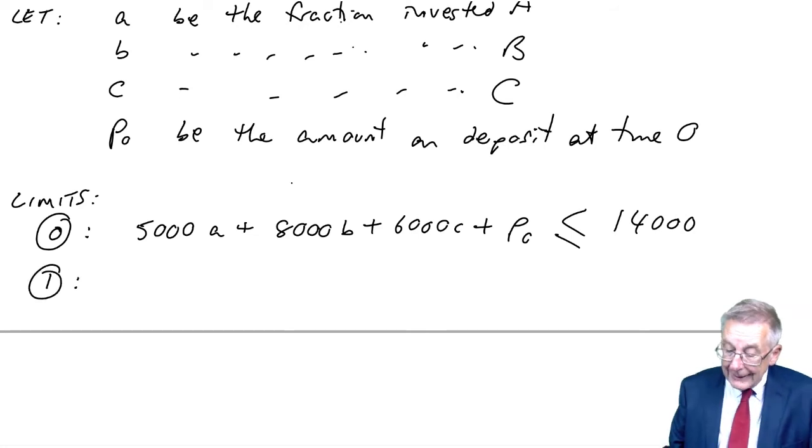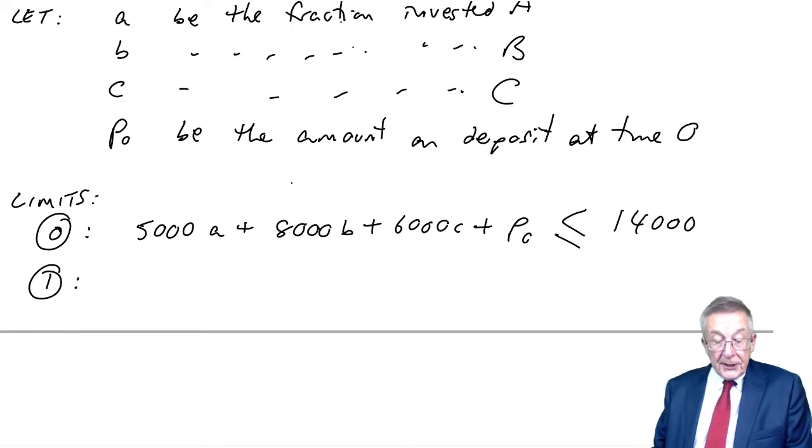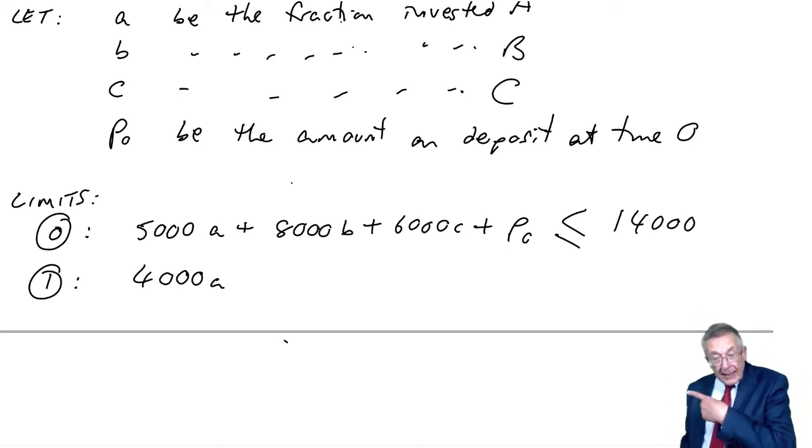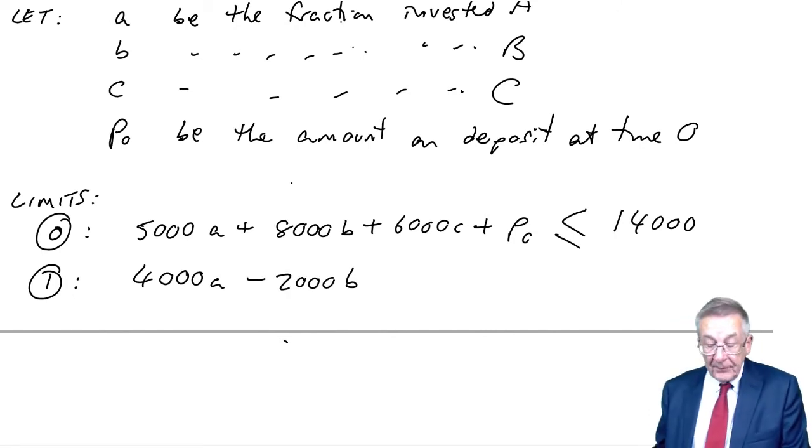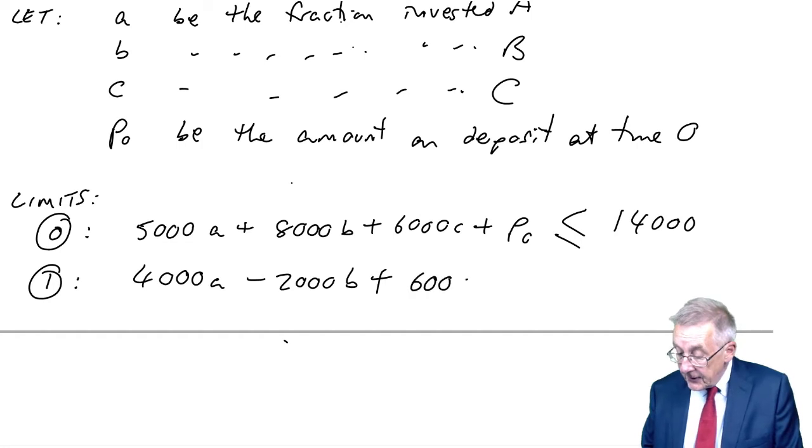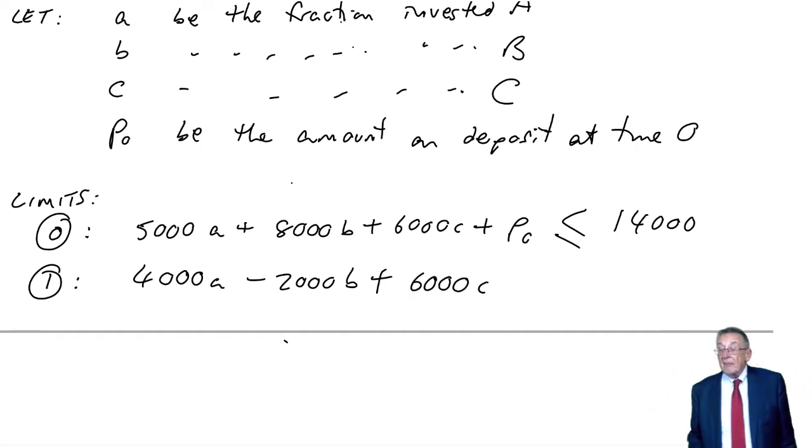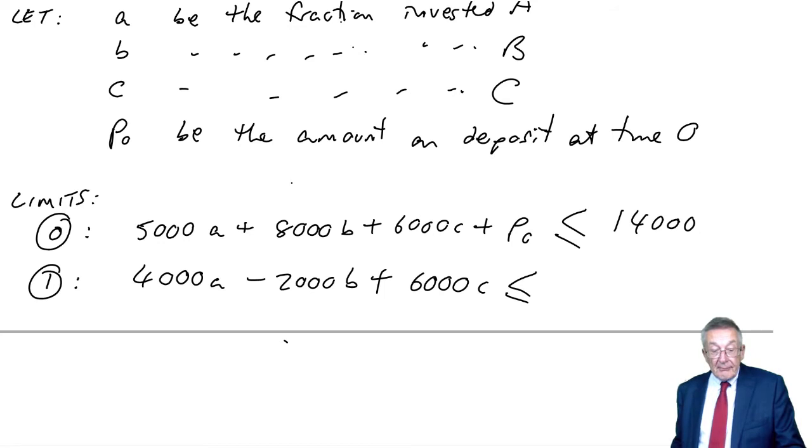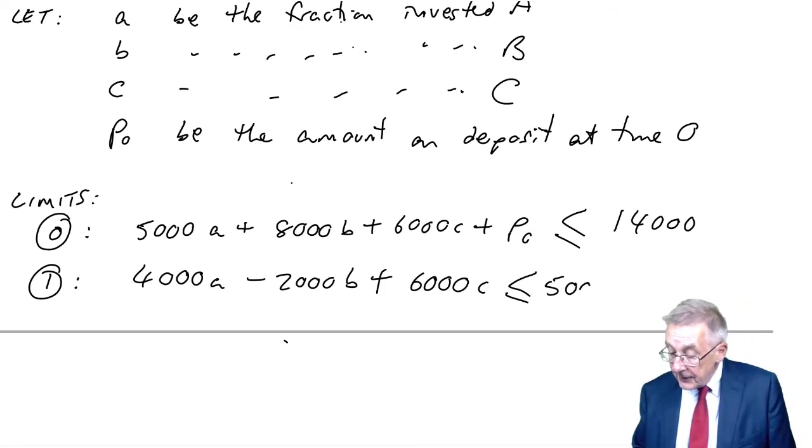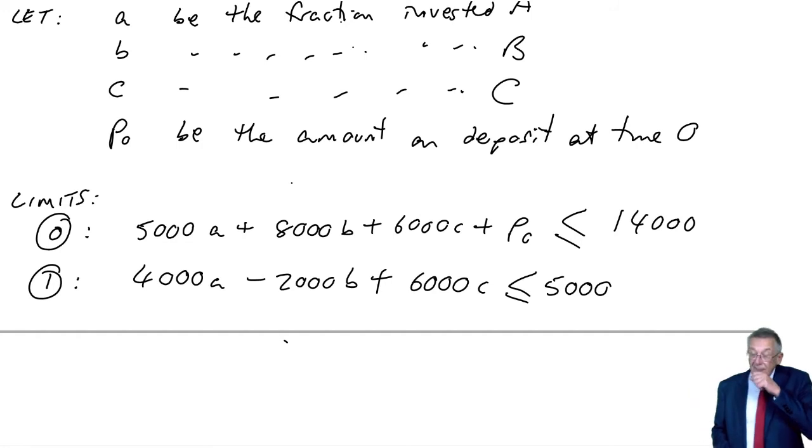In a similar way, at time one, what would we need? A needs 4,000, so in proportion A, it'll be 4,000 A. We get money back from B, so although you're paying out 4,000, you're getting back 2,000 B. You're paying out 6,000 C. I've explained why you wouldn't put any money on deposit. So there's the total we'd need at time one. That must be less than or equal to the amount available, which is 5,000.